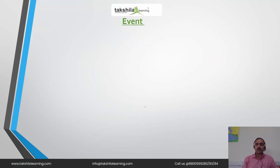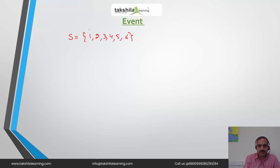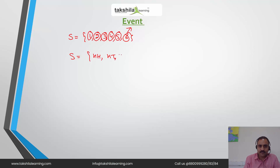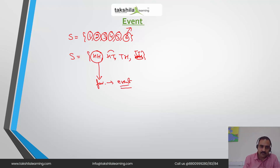Now, what are events? Suppose I roll a die and the possible outputs are 1, 2, 3, 4, 5, and 6. These single quantities or subsets are known as events — specifically the ones which are required. For example, if I toss two coins the sample space is head-head, head-tail, tail-head, and tail-tail. If my requirement is to get two heads, then head-head represents my favorable cases, and these favorable cases are said to be the favorable event.